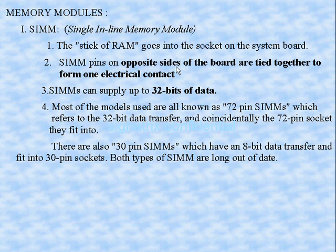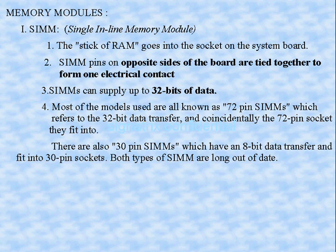SIM pins on opposite sides of the board are tied together to form one electrical contact. So when we plug our memory into the socket, the opposite sides of the board are tied together to make a single electrical contact. SIMs can supply up to 32 bits of data.